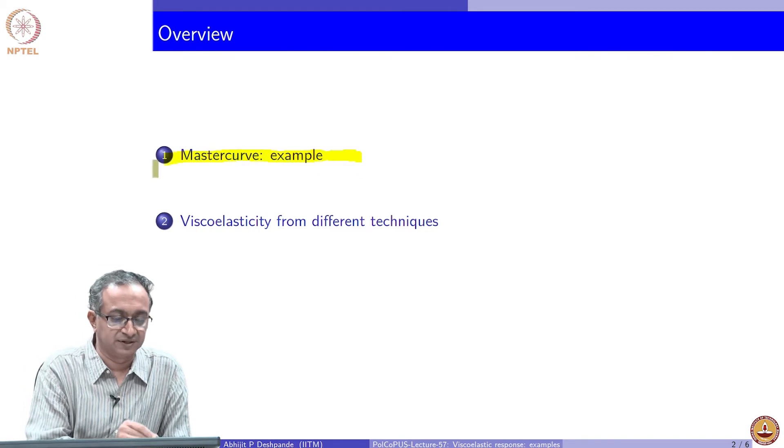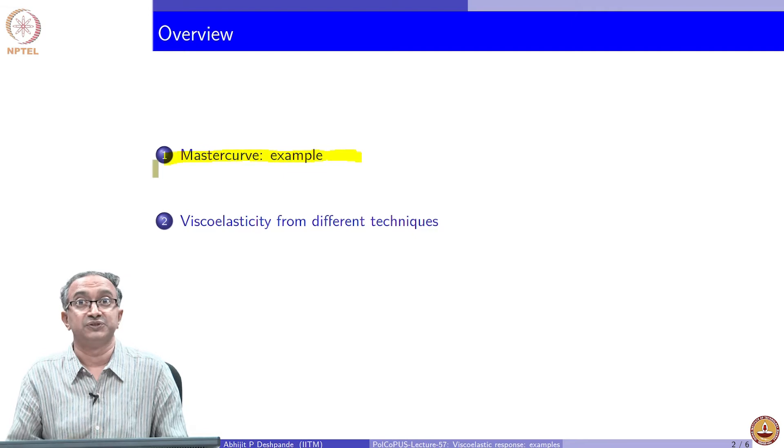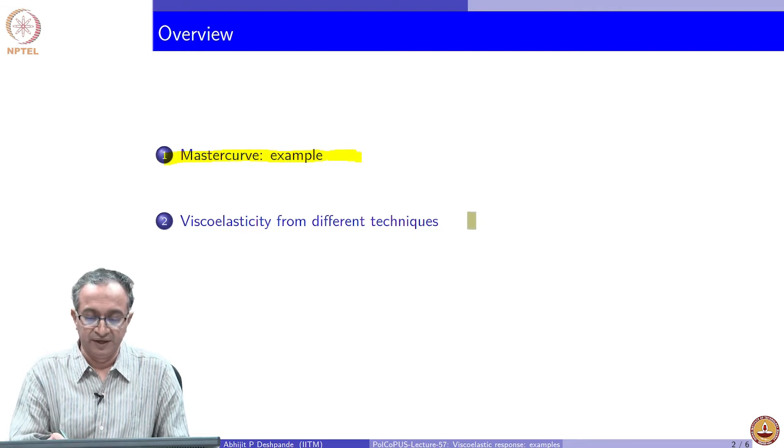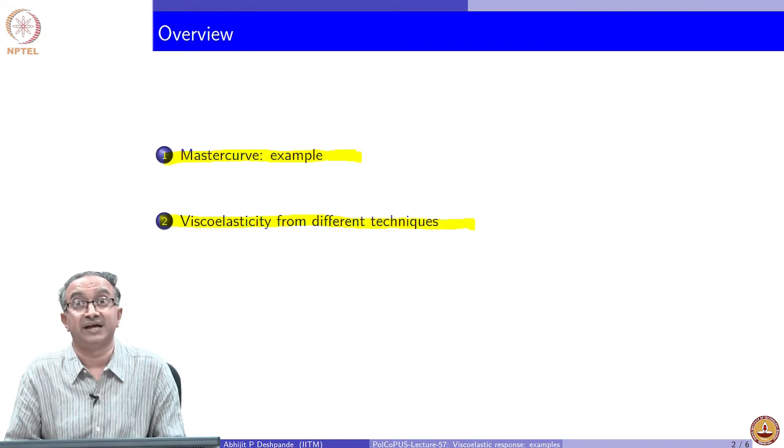We will look at an example of a master curve which is obtained doing time temperature superposition as we discussed earlier. And we have discussed dielectric response, we have discussed mechanical response.